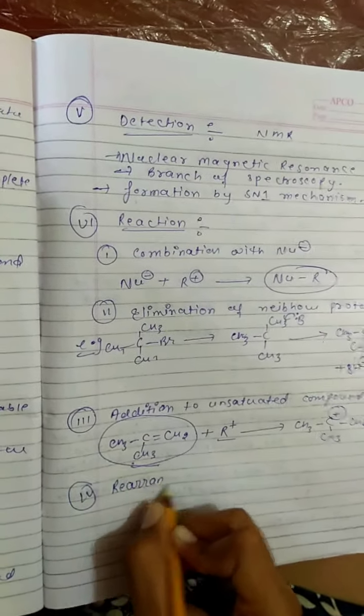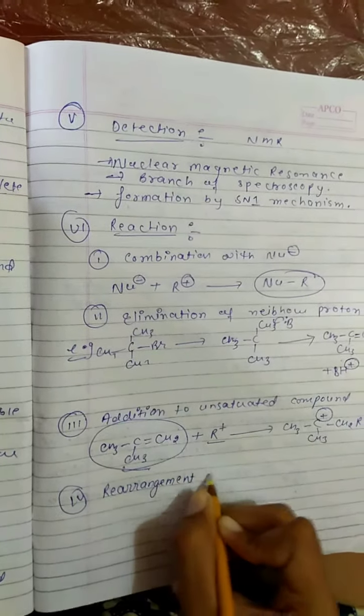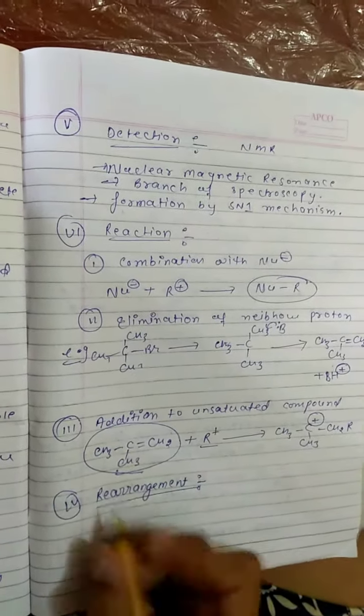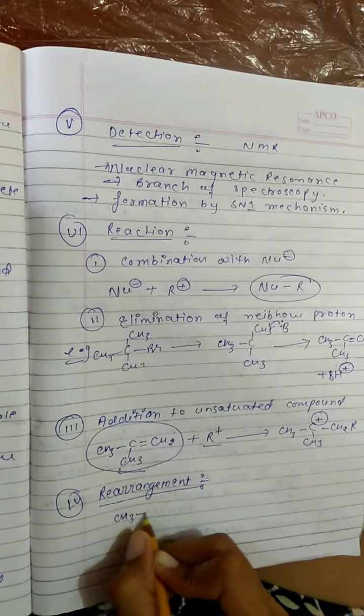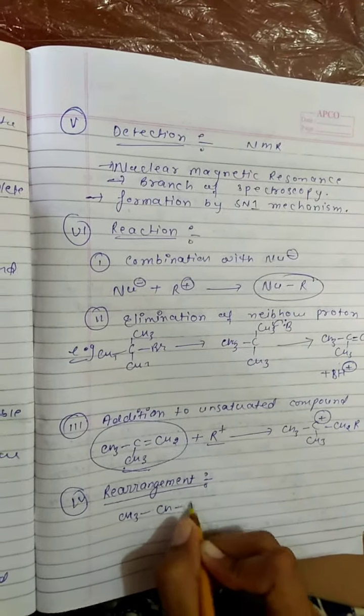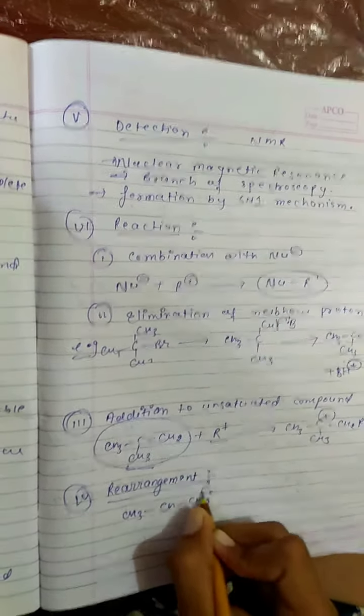Now the last we will talk about rearrangement. Meaning of rearrangement is 1,2 hydride shift. 1,2 hydride shift means if our positive charge is on first carbon, then it will shift to second carbon atom.